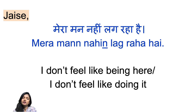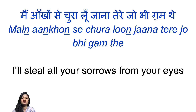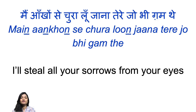Main aankho se chura loon, jana, tere jo bhi gam the. Aankho se means from eyes. Chura loon — churana means to steal, so chura loon means will steal. Jana here is not go — jana is the same as jaan, just a different form of speaking it — so beloved or love. Jo bhi means whatever, and gam means sorrows. So tere jo bhi gam the means whatever sorrows you had — I will steal them from your eyes, meaning I'll make sure that you are not sad.